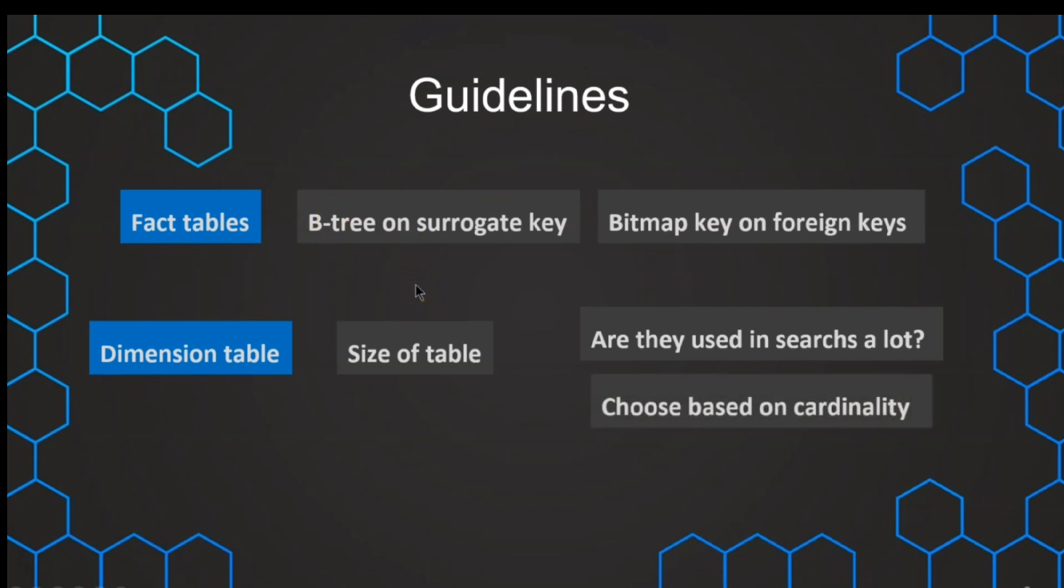And which one should we use? This is again, depending on the cardinality. If we have only two different values, for example, we have only 10 different categories in our huge dimension table, because we have maybe a lot of subcategories, then in this low cardinality, again, we use bitmap key. But if we have a very high cardinality, we typically benefit more from the B-tree index. So these are the very general guidelines that we can use to increase the performance of our data warehouse by using indexes.